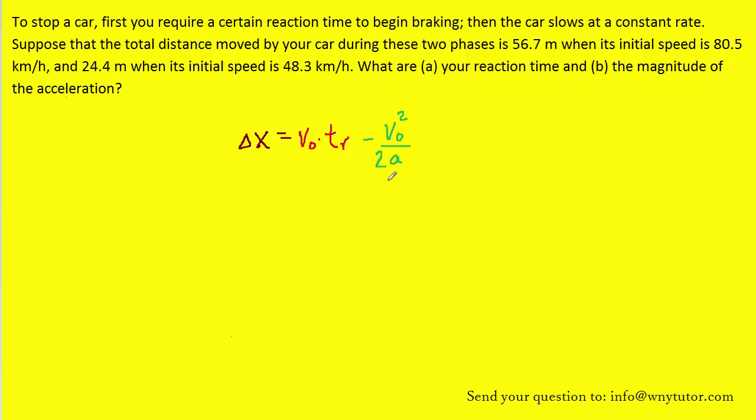Perhaps next what we can do is plug in some of the known information. Notice we're going to have to do this twice because we were given two initial speeds and two total distances. For example, the total distance in one case was 56.7 meters and the speed was 80.5 kilometers per hour. But then the second case, the total distance was 24.4 meters and the initial speed was 48.3 kilometers per hour. We're going to have to plug in twice into this equation with these two sets of conditions. It's probably wise to convert the 80.5 kilometers per hour into meters per second, and the 48.3 kilometers per hour also into meters per second. Let's actually do that first.